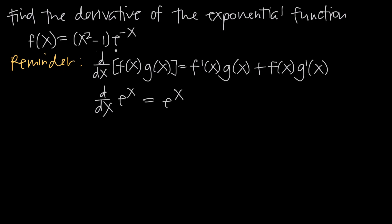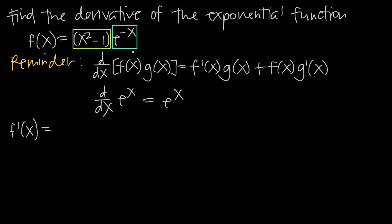So there are a couple things going on here. We need to find the derivative of this function. The derivative of f of x is going to be f prime of x. To take the derivative of the right-hand side, what we need to realize is that we have the product of two functions. The first function is the quantity x squared minus 1, and the second function is e to the negative x. So we have these two functions multiplied together, and when we have two functions multiplied together and need to take the derivative, we have to use product rule.